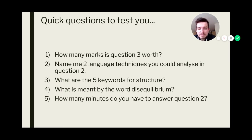So, to go through the answers for these questions, how many marks is question 3 worth? It is worth eight marks. Name me two language techniques you could analyse in question 2. You could analyse similes, metaphors, alliteration, verbs, nouns, adjectives. Any technique that you've looked at so far in your literature studies would work for this. What are the five keywords in structure? It's really important to understand what these mean because if we know these, we will have a good structure for our answer for question 3. They are focus, shift, establishment, development and conclusion.